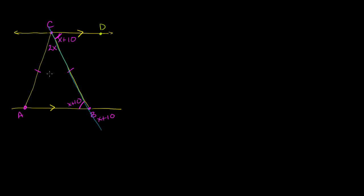It's an isosceles triangle, so your two base angles are going to be congruent. So if this is x plus 10, then this is going to be x plus 10 as well. And now we have the three angles of a triangle expressed in terms of x.